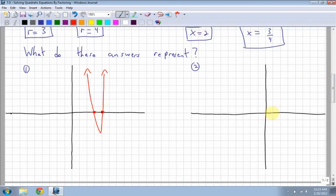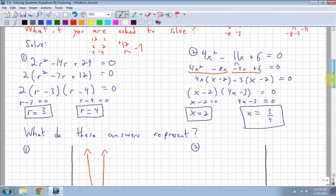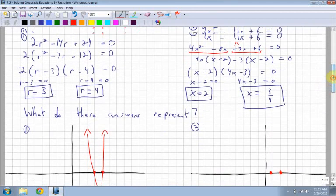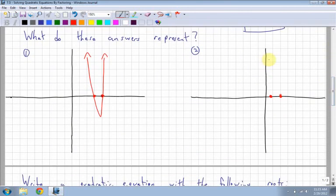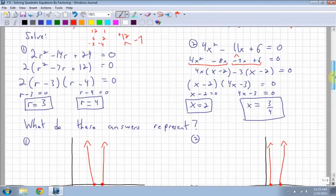Just like this one, x equals 2 and x equals 3 quarters, which is about 0.75. Again, check the value in front of x squared. It's positive, positive 4. So therefore, my graph is going to be shaped like this. So again, they represent your x-intercepts, the zeros.